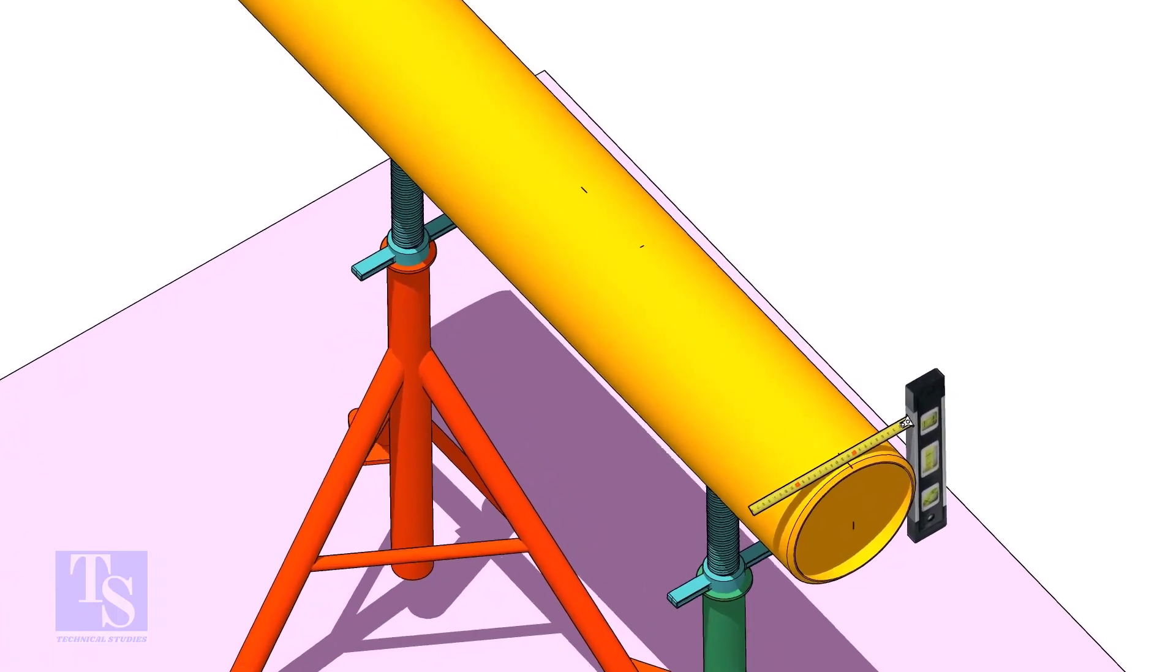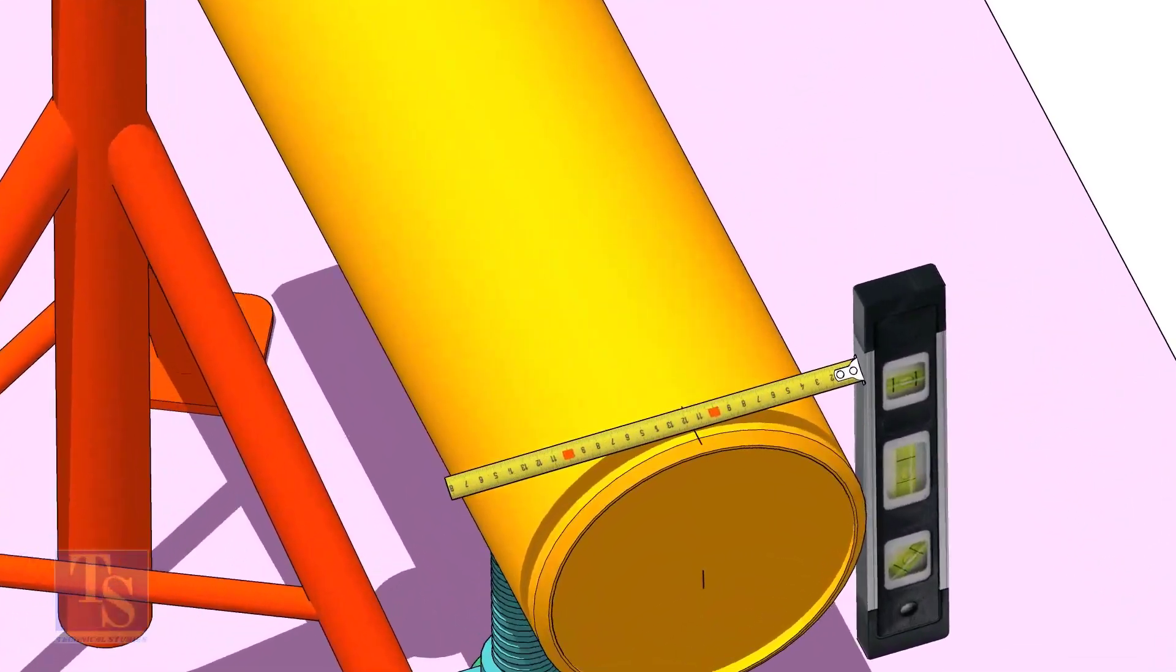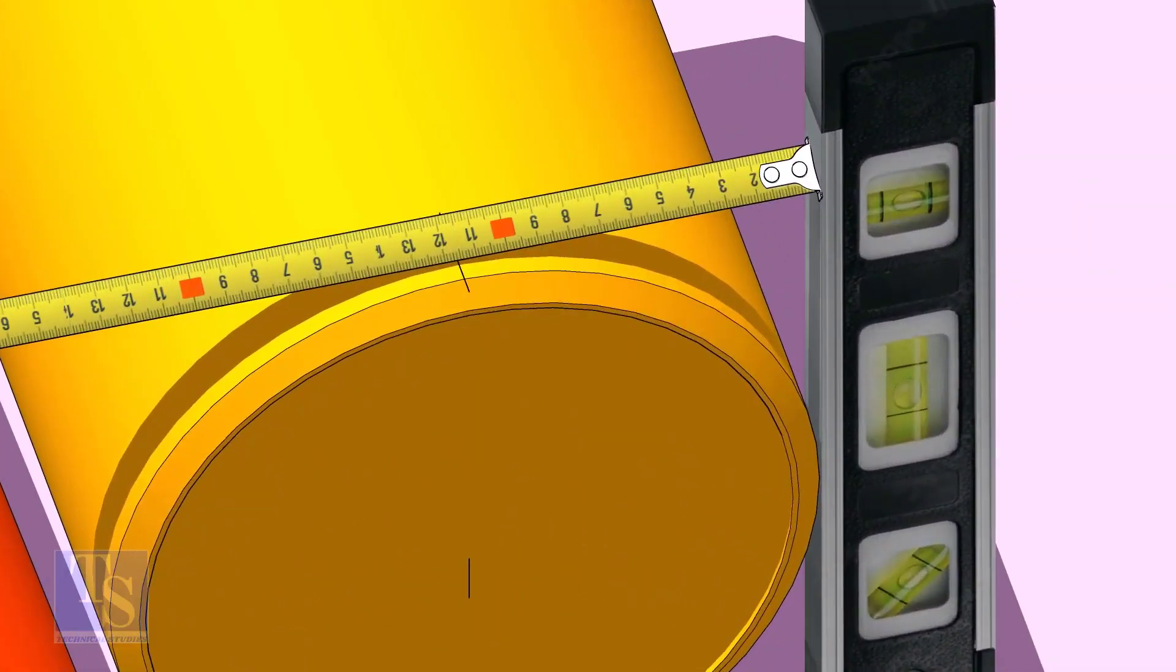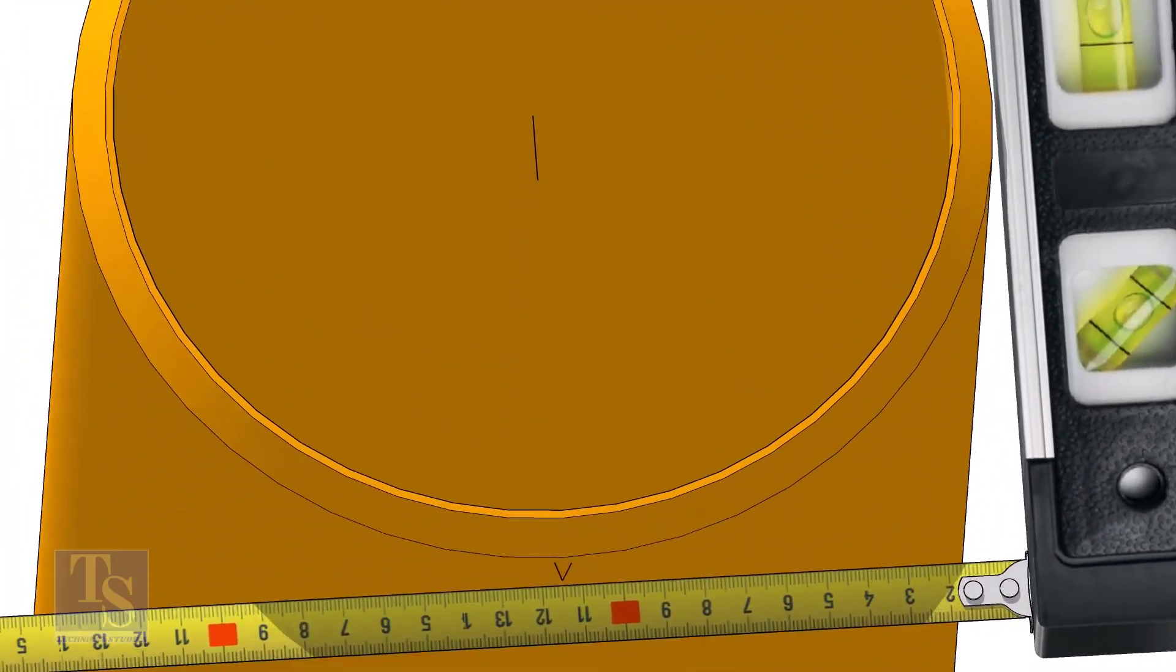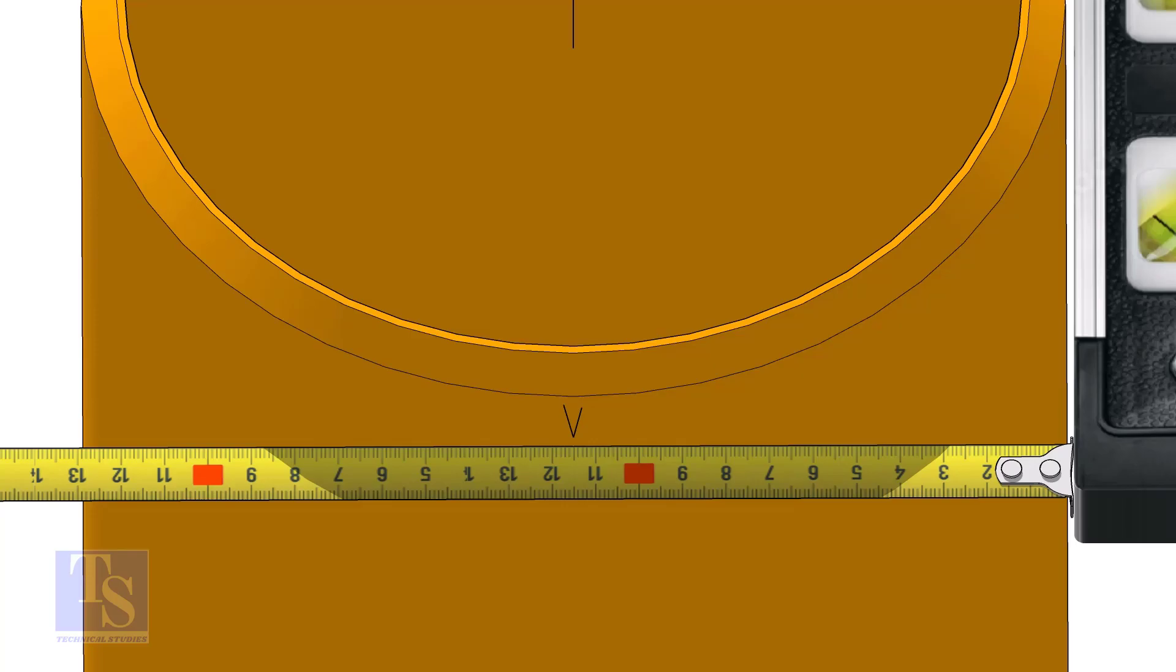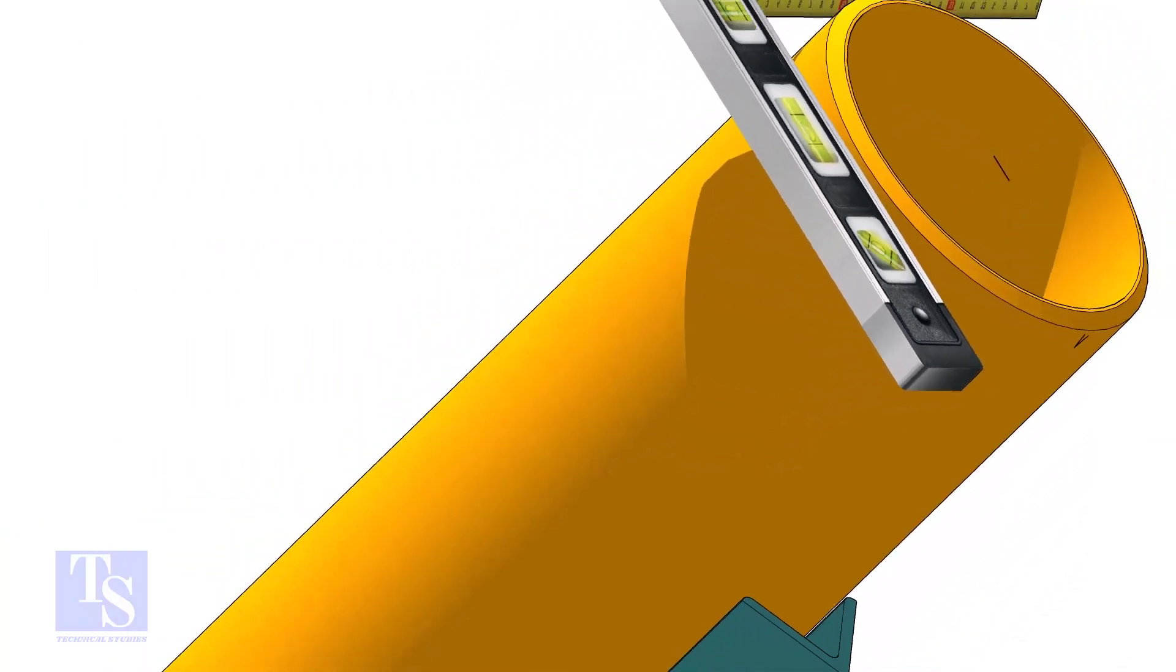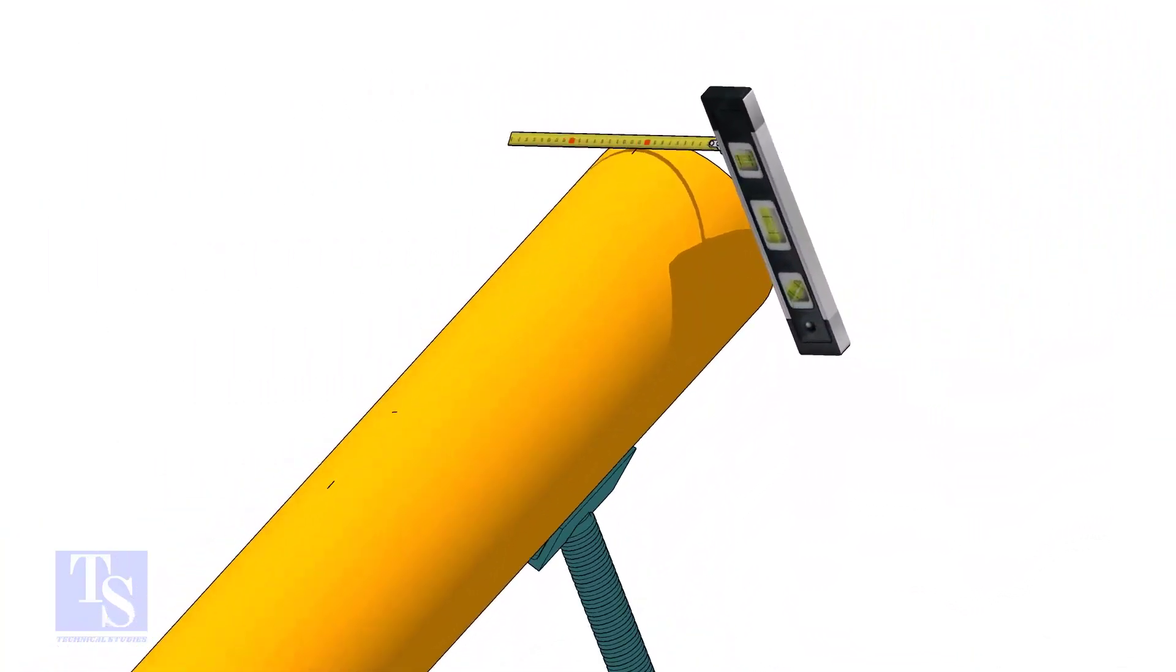Mark the center line of the header on the top and the bottom. Hold a level bottle firmly and vertical at the side of the pipe as shown. Mark half OD at the top and the bottom side of the pipe. Cross check the dimension from the opposite side to ensure the marking is correct.